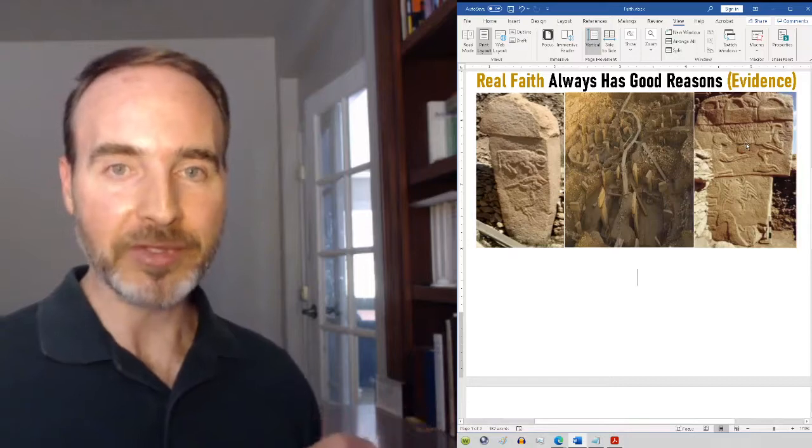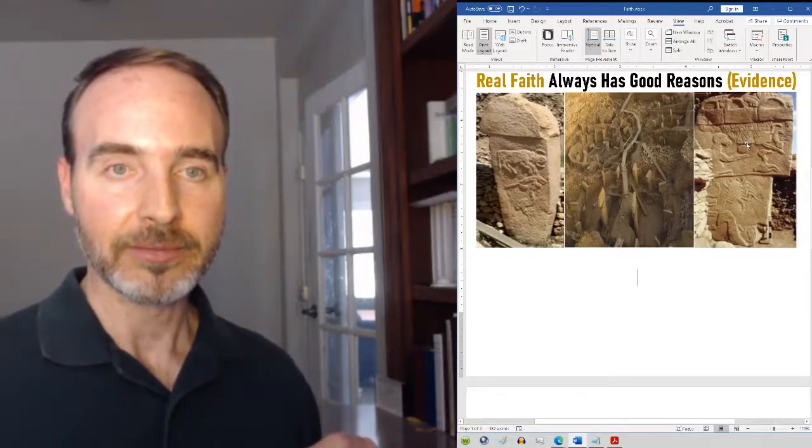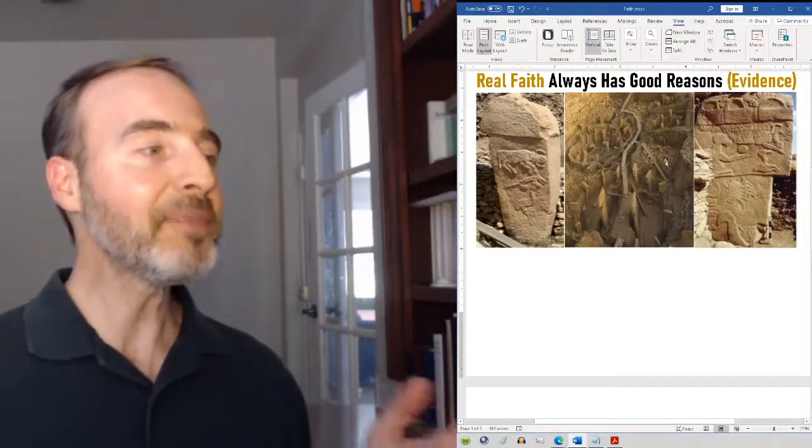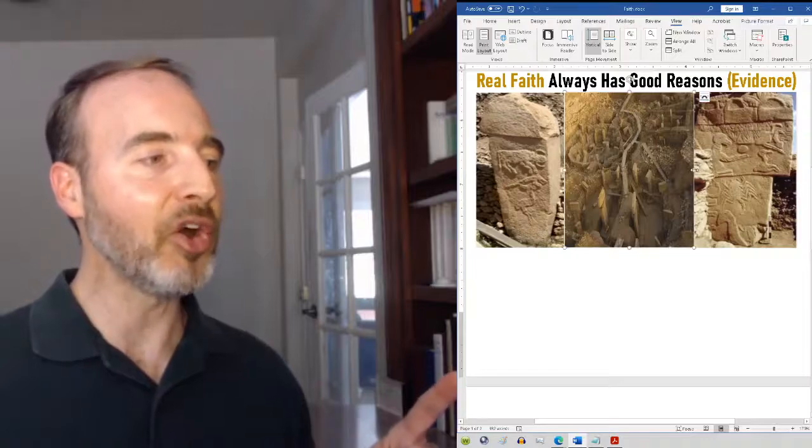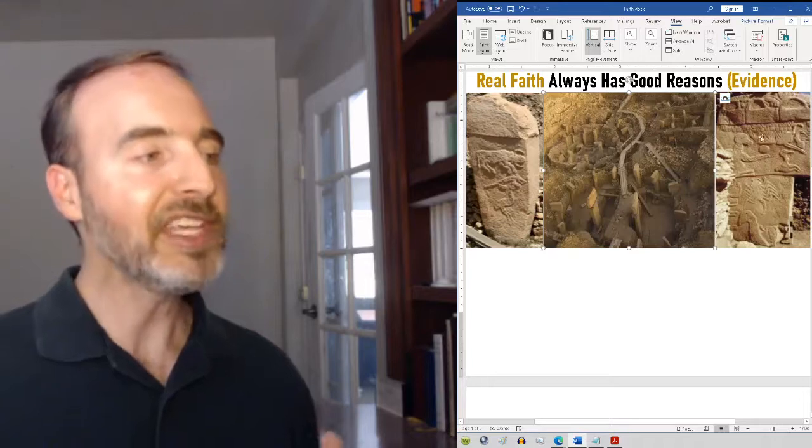Where did he keep all the animals? I believe he kept them right here at Gobekli Tepe. Look at the middle image. It's an overhead view of all these circular holding pens. That these stone monuments, these massive monoliths, mark out the exact type of creatures.